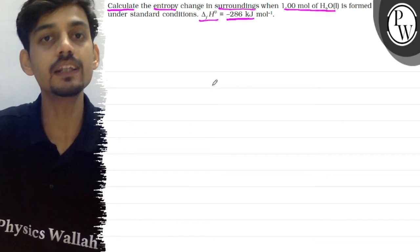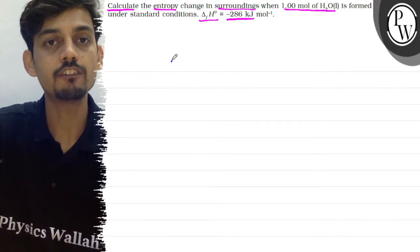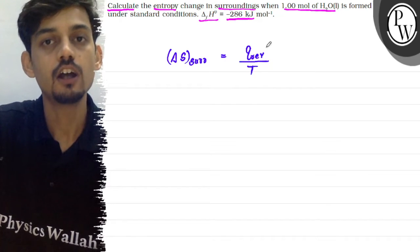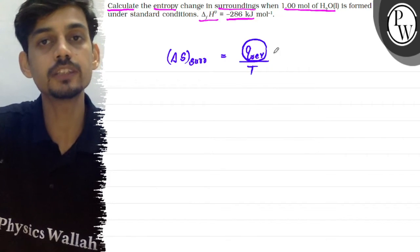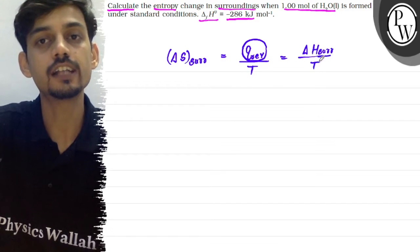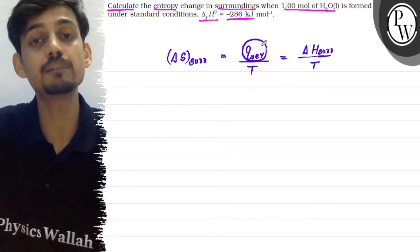We need to find the surrounding entropy change. For surroundings, the entropy change can be written as delta S equals Q reversible divided by temperature. Since the surrounding pressure is constant, Q can be written as delta H for surroundings, because constant pressure heat equals delta H.